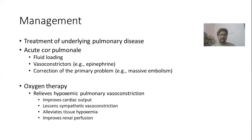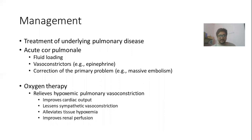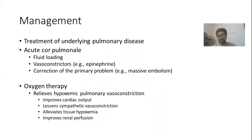For management of cor pulmonale, we need to manage the underlying disease and address symptoms of right heart failure. In acute cor pulmonale, the patient will have decreased cardiac output and hemodynamic compromise, so fluid loading is important. Vasoconstrictors like epinephrine are necessary when the patient is in cardiogenic shock. We also need to correct the underlying cause — for example, if there is massive embolism, thrombolytic agents may be used, or catheter-guided or surgical embolectomy might be needed.